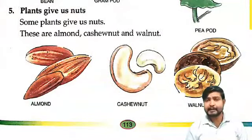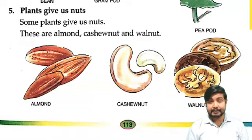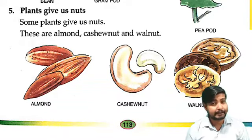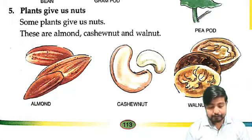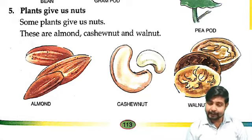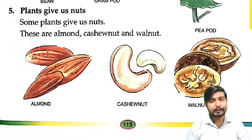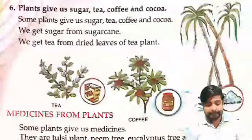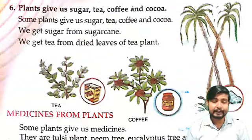Then plants give us nuts. Some plants give us nuts. Aise bhi kai sare plants hai jo hamein nuts dete hain, jaise ki almond, cashewnut, walnut. Jinka hum nut khaate hain.